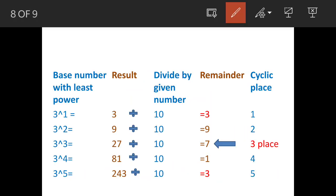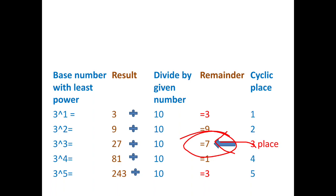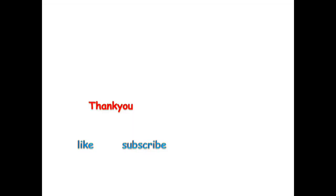Just see now: third cyclic place, the remainder is coming to 7, so 7 is the answer. Hope this is clear. Thanks for watching, thank you very much.